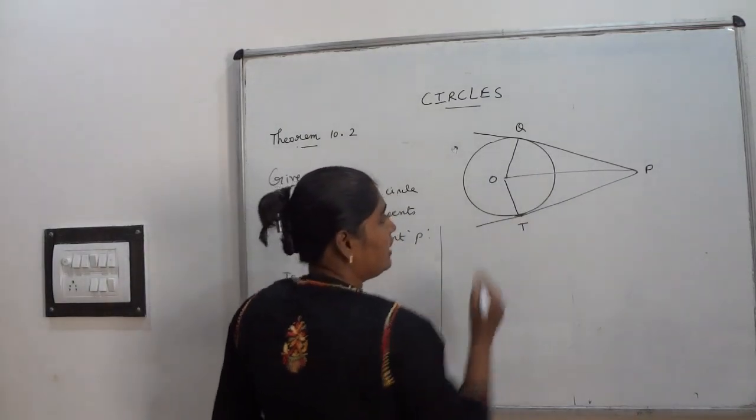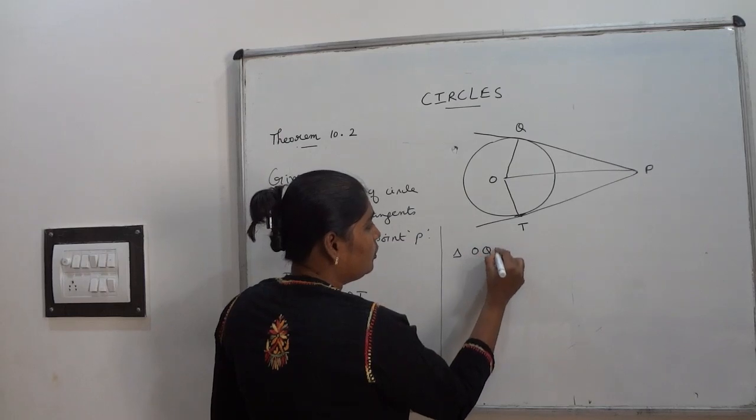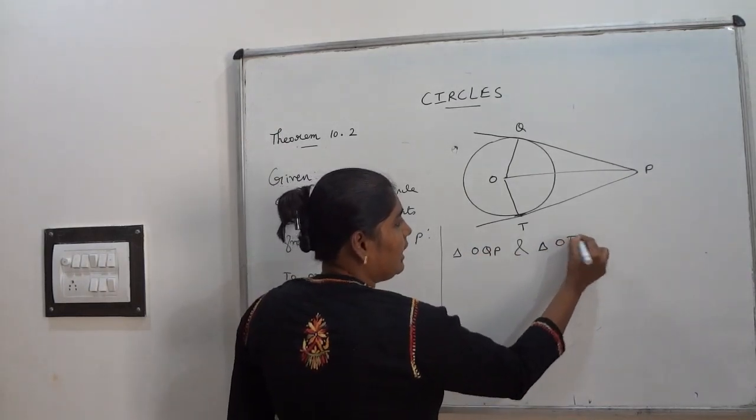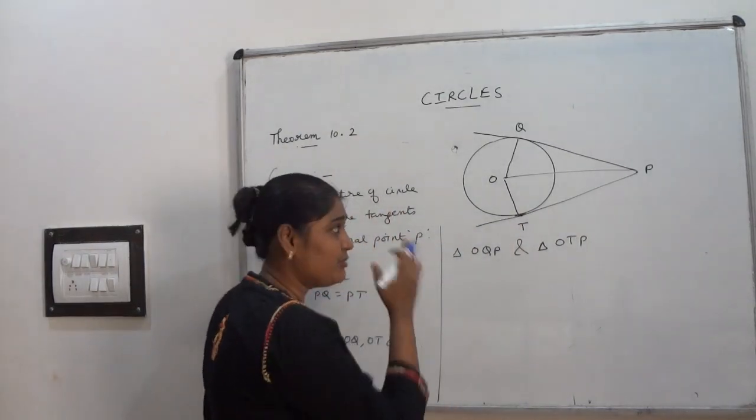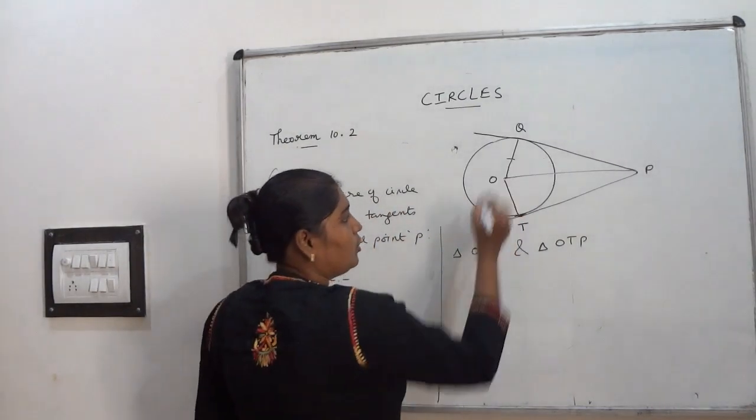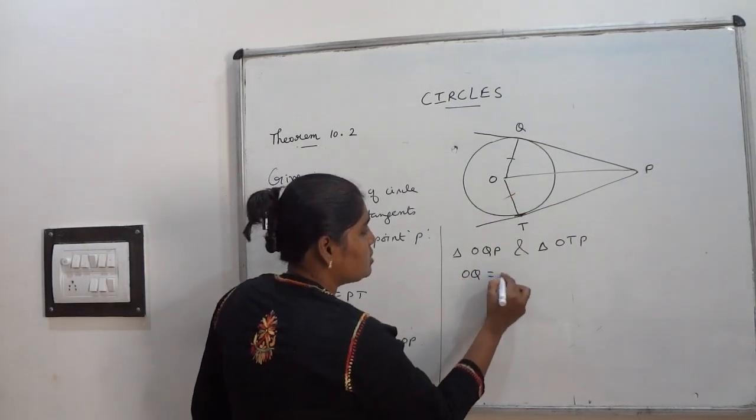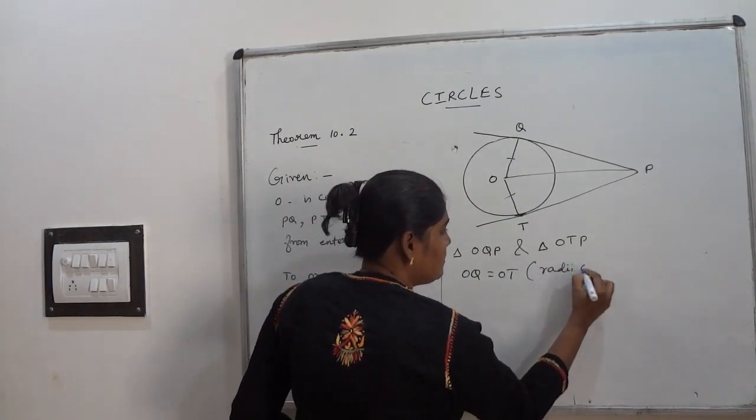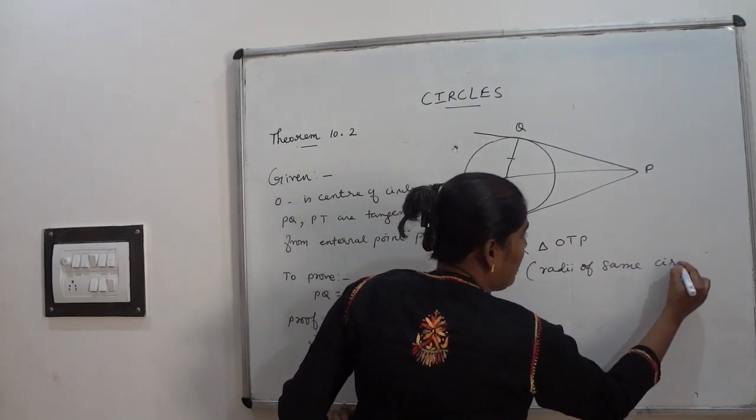Take the two triangles that is triangle OQP and another triangle OTP I have taken. Now you see what are the sides equal from these two triangles. OQ equal to OT because same radius. OQ equal to OT, radii of same circle. You have to mention the point.